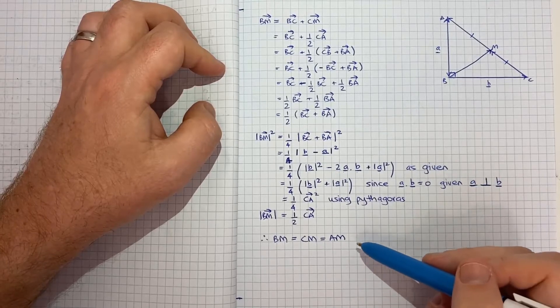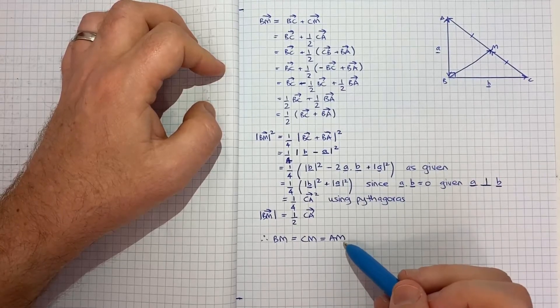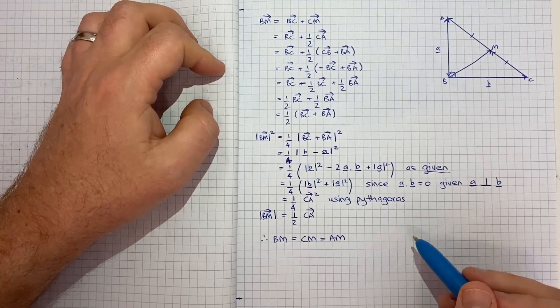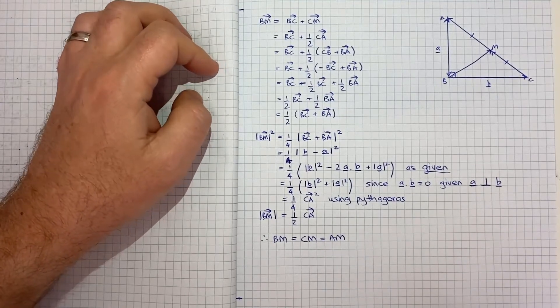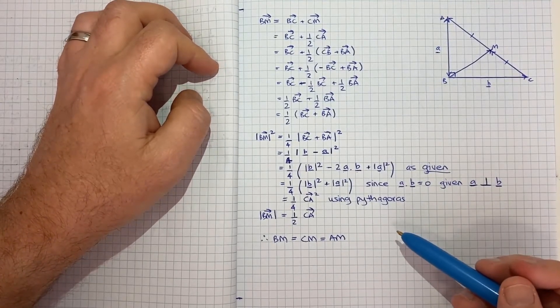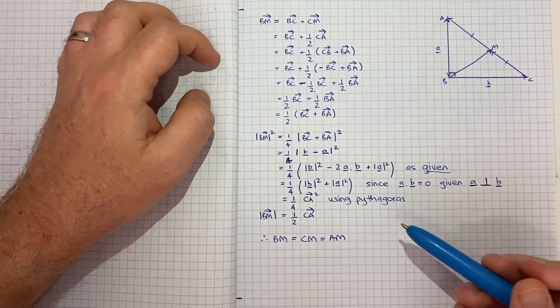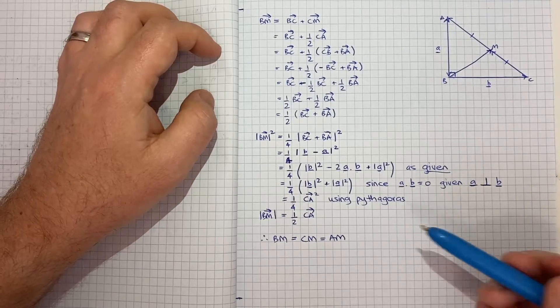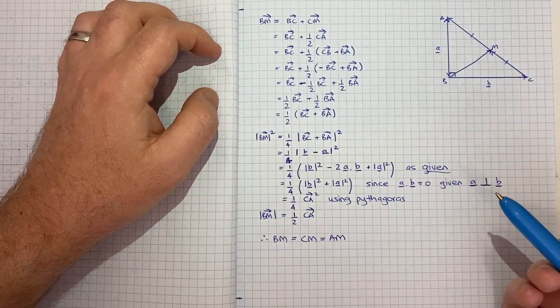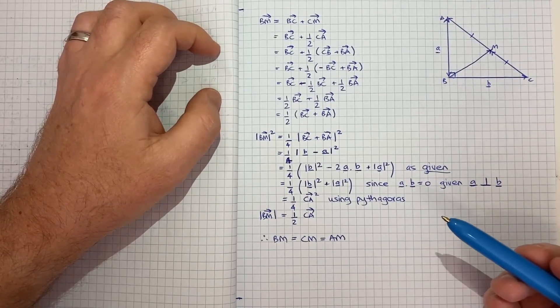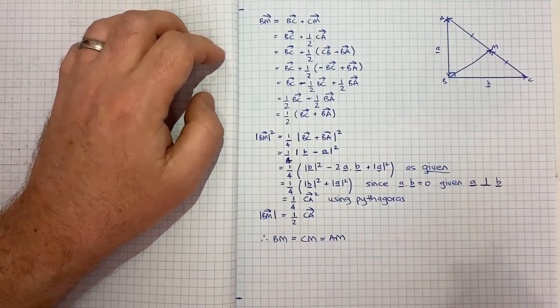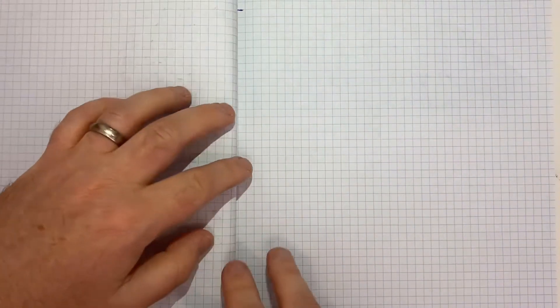Therefore we know that the line b m is equal to c m, which is equal to a m, because they're all equal to a half of the vector c a. So that's the first way to go about it. And that way involves using one of the results that we're given. Now there is another way, and I'd like to walk through that because I think in the context of, say, doing this in an exam, the approach I'm about to show just for me is the one I'd naturally go to. It may not be the case for you, but it's probably worth showing it just so that you've got an extra option.